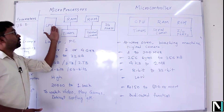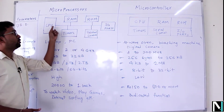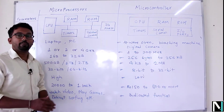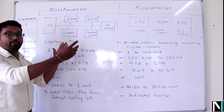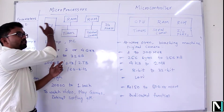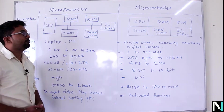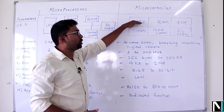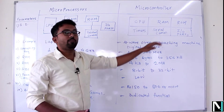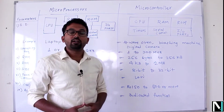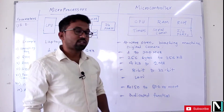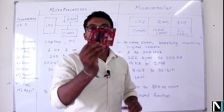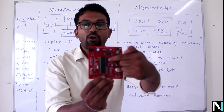Observe the block diagram carefully. A microprocessor based system has CPU, RAM, timer, serial communication, and input/output ports — these are all different peripherals that communicate with the CPU. But in the case of a microcontroller, all of these — CPU, RAM, timer, serial communication, and input/output ports — are present on-chip.